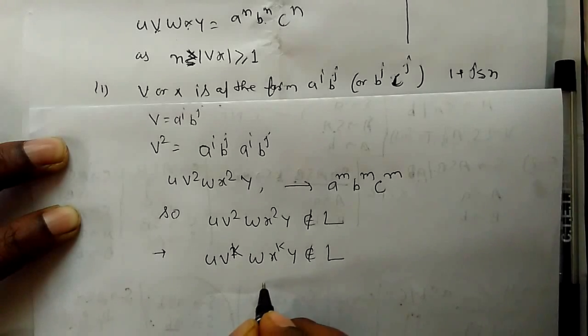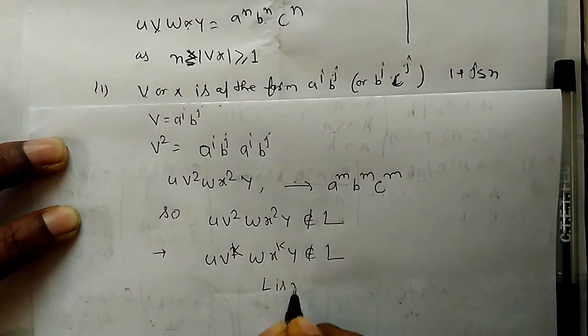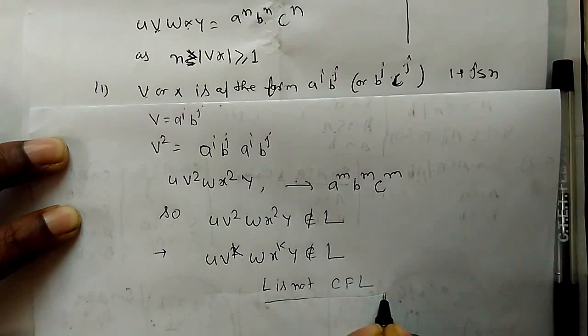Thus, for any choice of v and x, we get a contradiction. Therefore, L is not a context-free language.